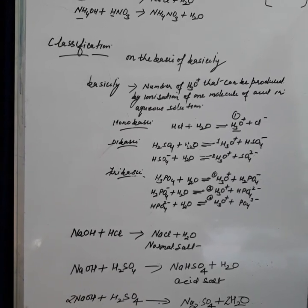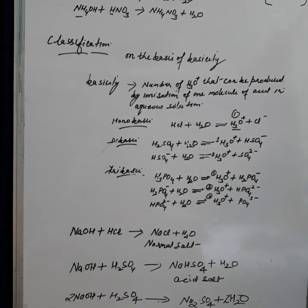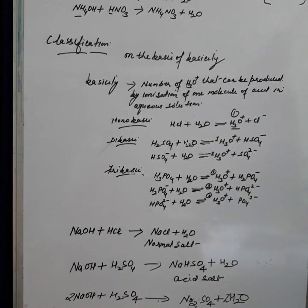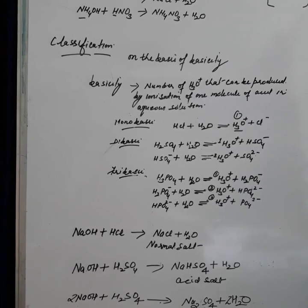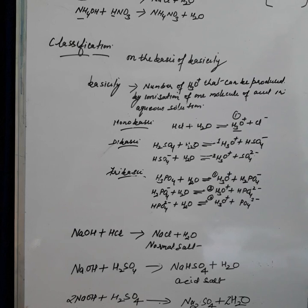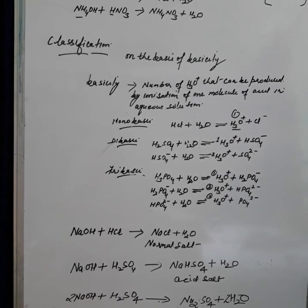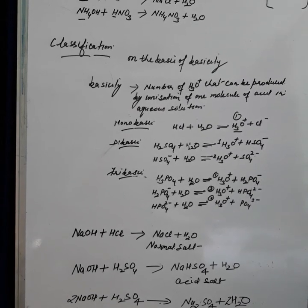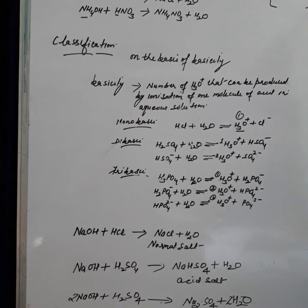Now, classification. The first criteria is on the basis of source of origin — where the acid is derived from. Acids can be classified into two categories: organic and inorganic acids. Inorganic acids are derived from minerals, which is why they are also known as mineral acids. Examples include hydrogen chloride, nitric acid, carbonic acid, and phosphoric acid. They are highly corrosive in nature, except carbonic acid.